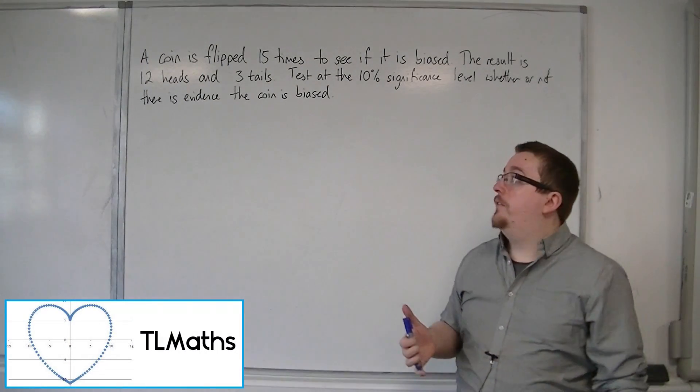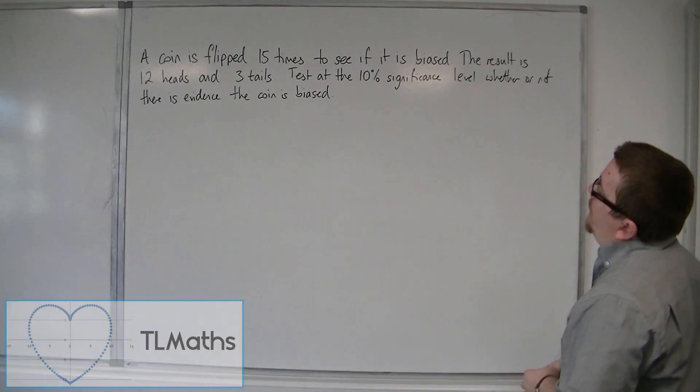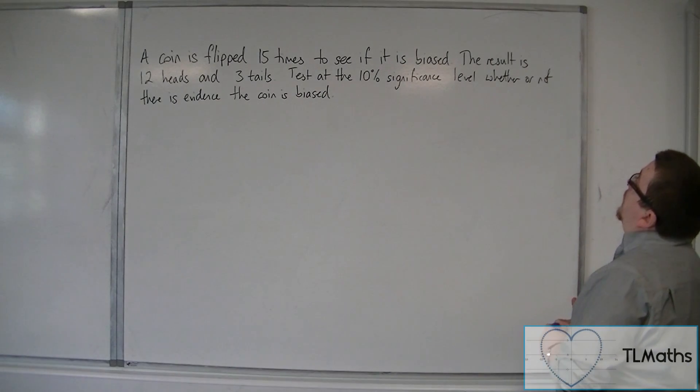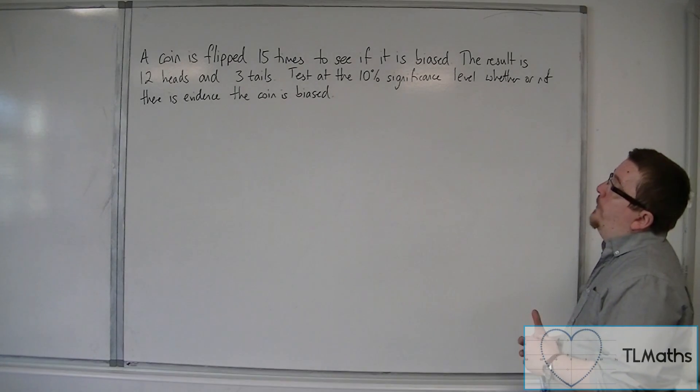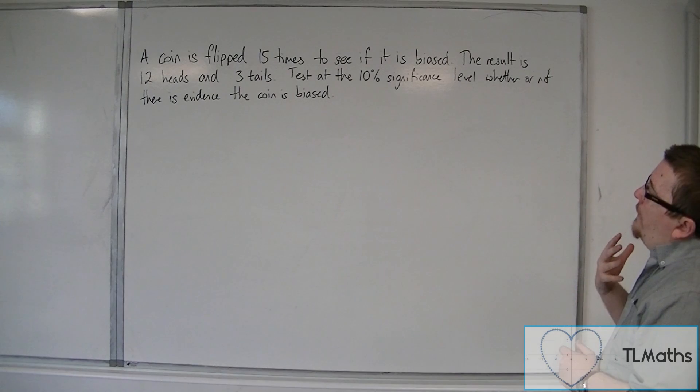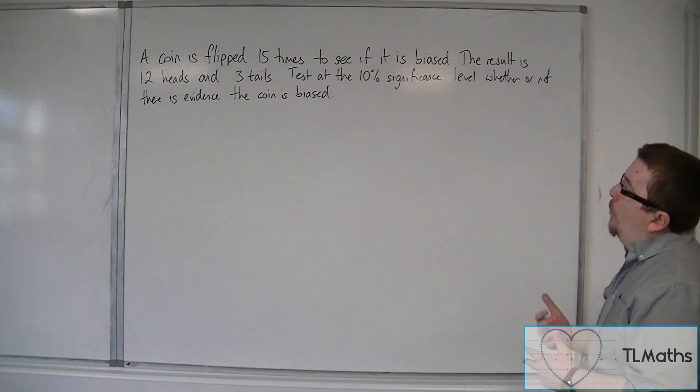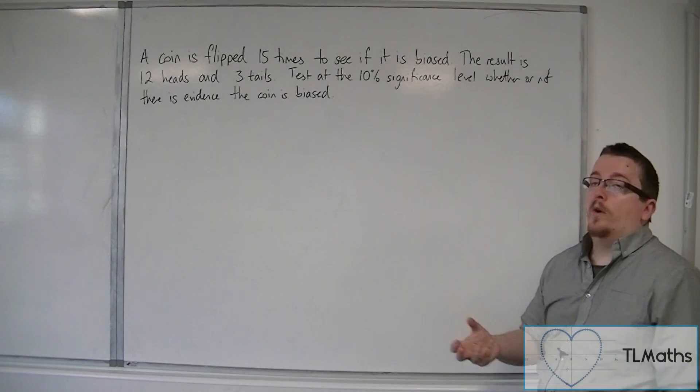So let's look at a two-tailed test. A coin has flipped 15 times to see if it is biased. The result is 12 heads and 3 tails. Test at the 10% significance level whether or not there is evidence the coin is biased.